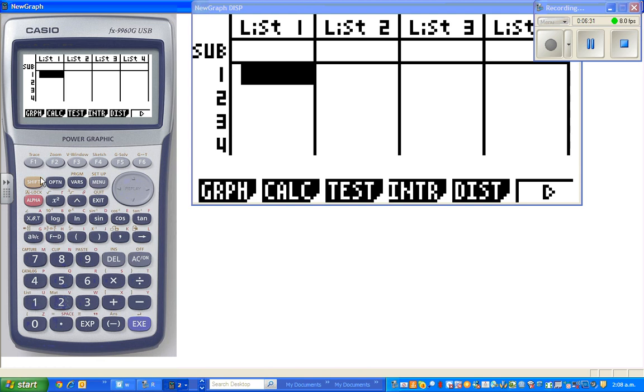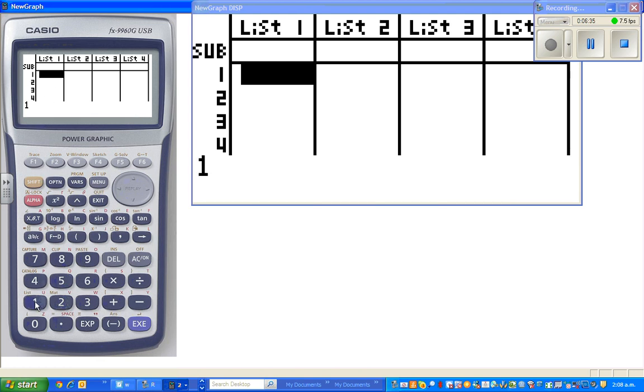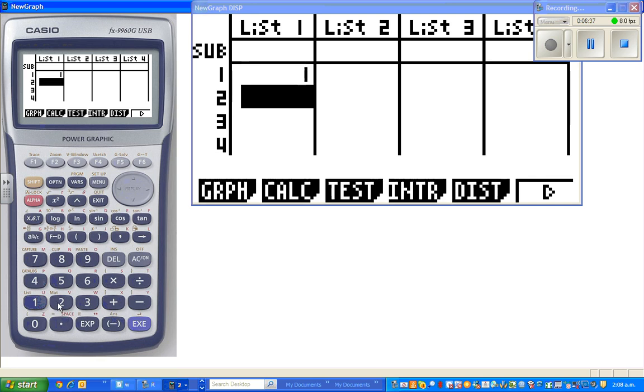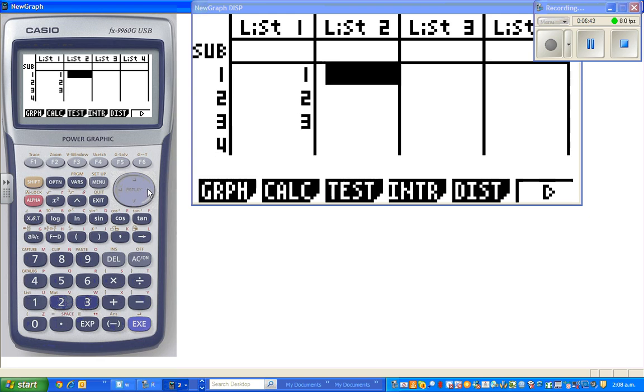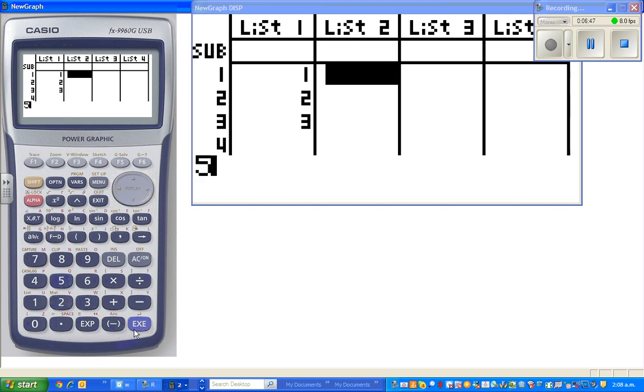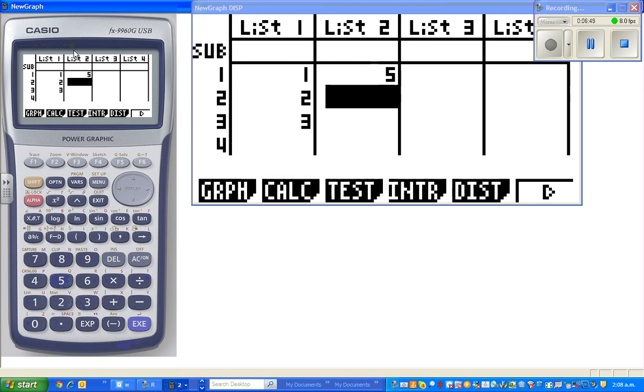I'll just show you. So I'll enter 1, 2 and 3. So execute. And in list 2 I'll enter 5. When the first pattern had 5, the second pattern had 5 plus 6 is 11.